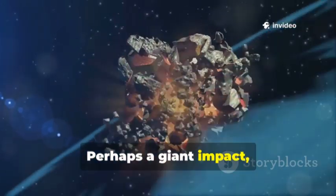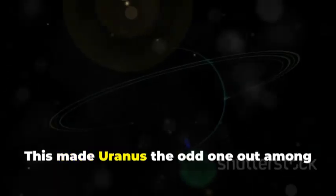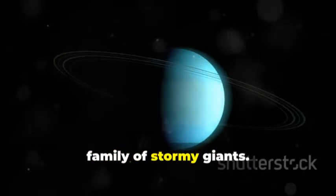Perhaps a giant impact, the same one that knocked it on its side, caused it to lose its internal heat. This made Uranus the odd one out among the giant planets, a quiet sibling in a family of stormy giants.